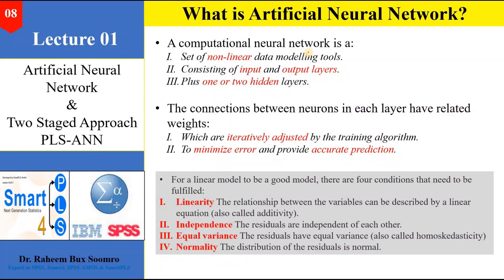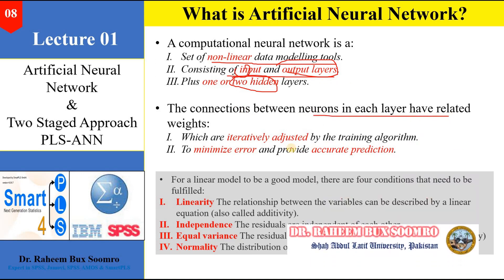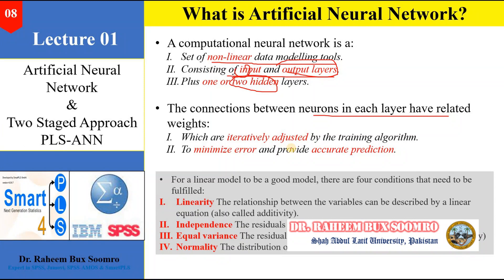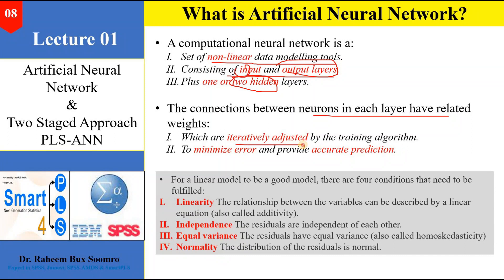Artificial neural network is a non-linear data modeling tool consisting of input and output layers. There are three types of layers: the input layer, the output layer, and the hidden layer, which we cannot see — that is why we use the term black box. The connections between neurons in each layer have associated weights which are actively adjusted through certain algorithms. In lecture number two I discuss the algorithms used by the ANN approach to minimize error and provide accurate prediction.